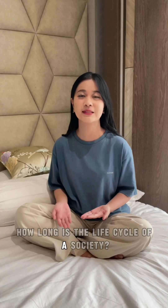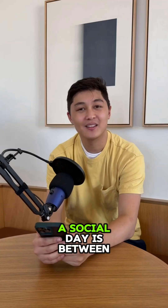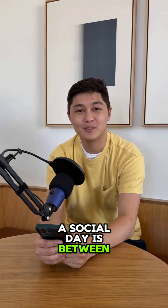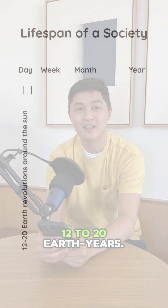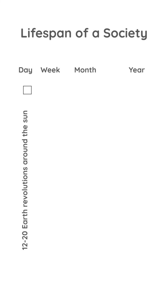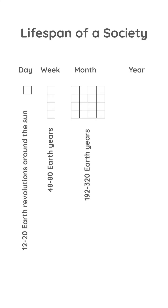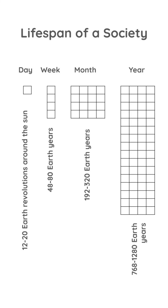How long is the life cycle of a society? A social day is between 12 to 20 earth years. A social week has four days, a social month has four weeks, and a social year is four months.